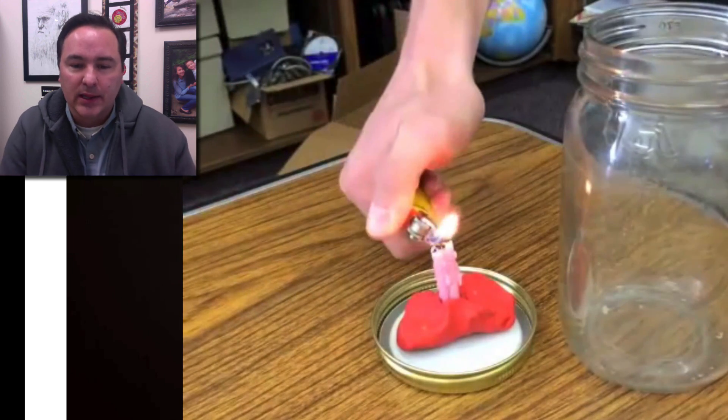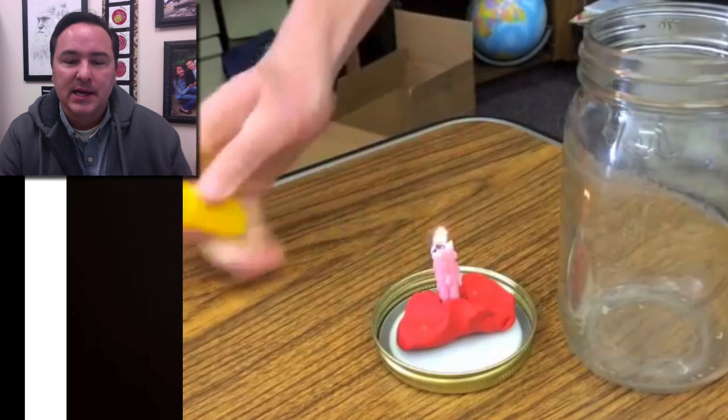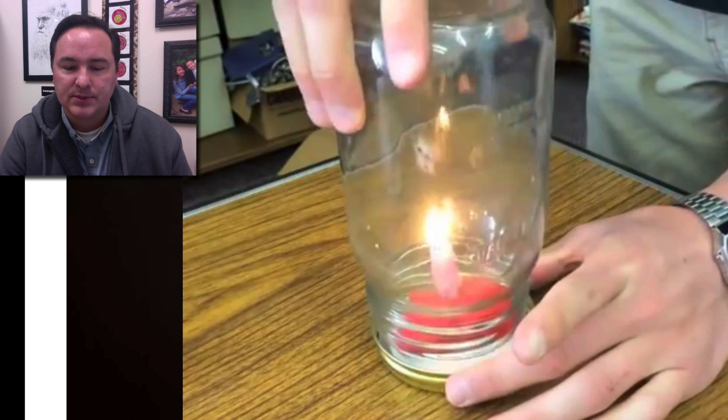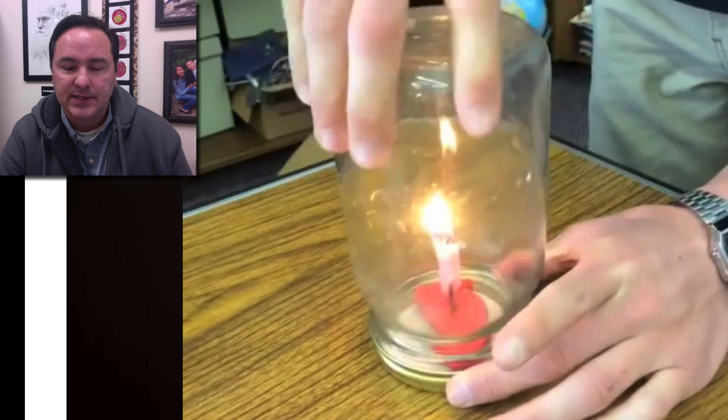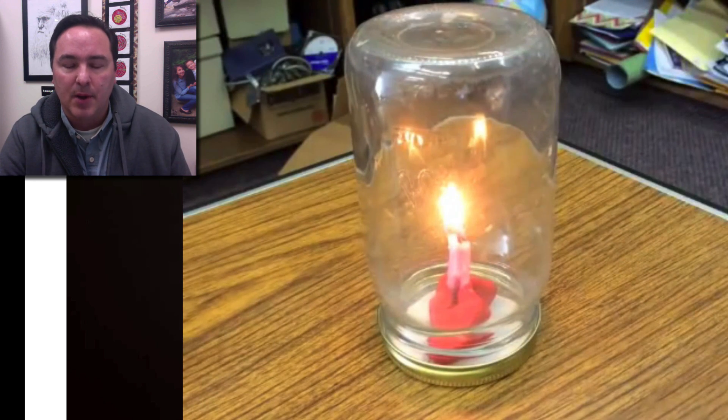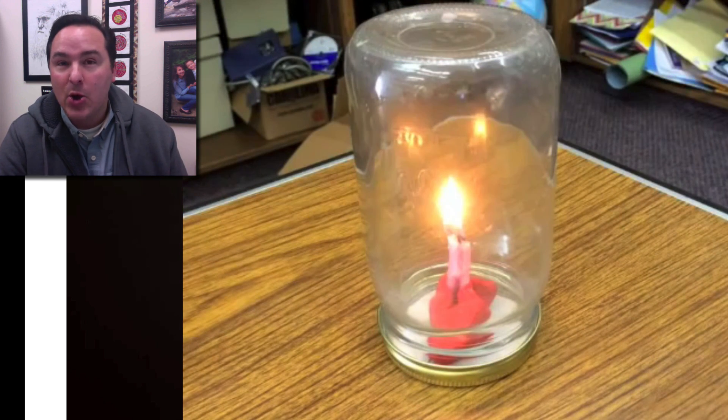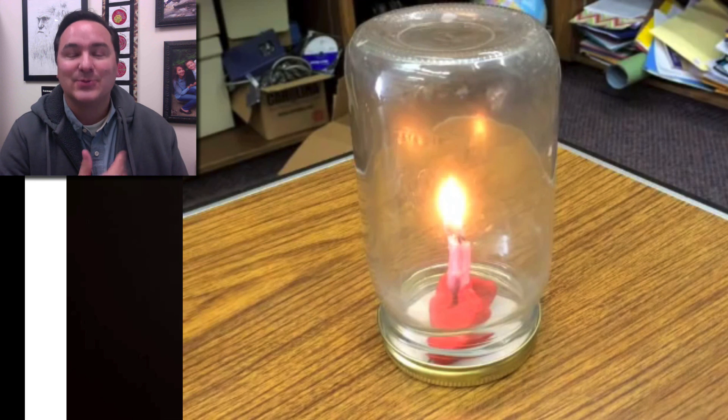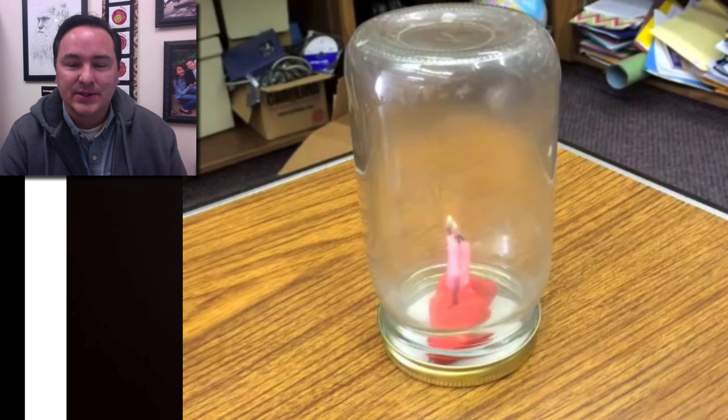Here we have a candle. We're going to light it, and we've stuck the candle inside of this silly putty so that it'll stay standing upright. We put the jar and screw the jar on. Now, you probably already know what might happen here. As we continue to watch, pretty soon the flame extinguishes. What happened?